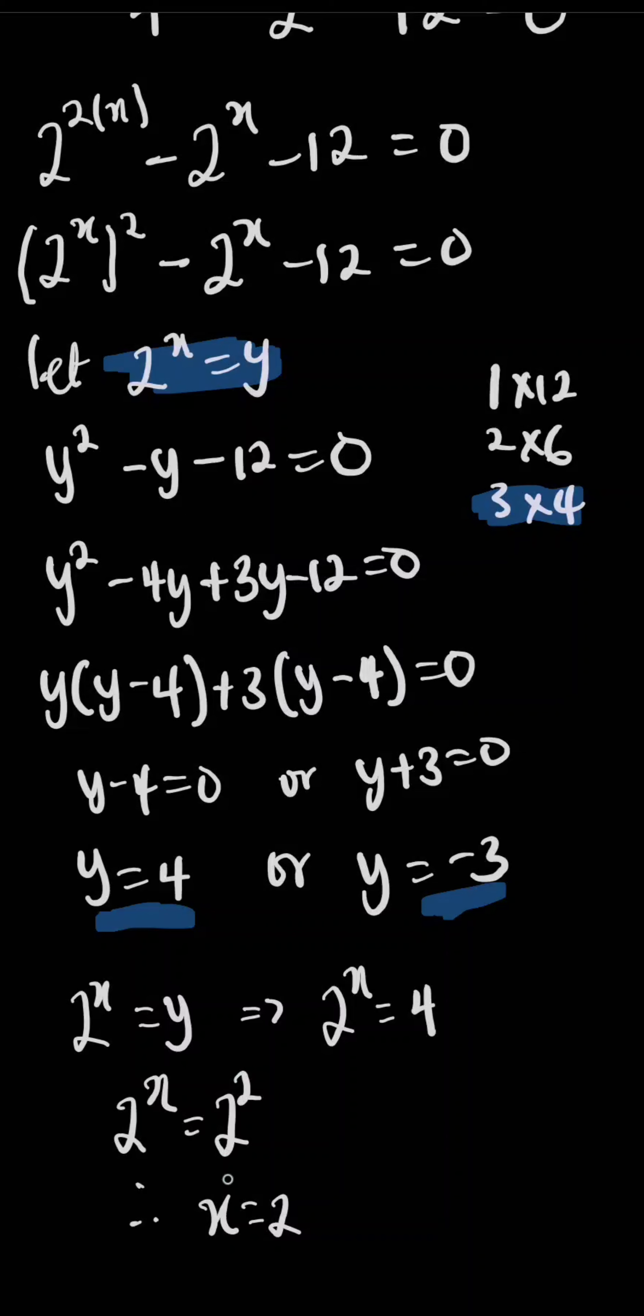The reason why we use this solution and not the other is because 2 to the power of x equals negative 3 can never be equal. Therefore, our solution to this problem is x equals 2.